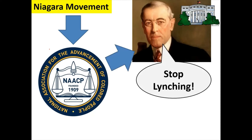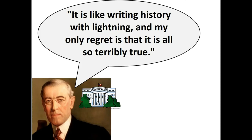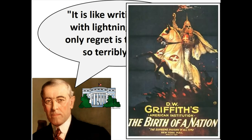An example: this organization lobbied to get the president to stop lynching and make it illegal. And so Woodrow Wilson passed a law that stopped this. But Woodrow Wilson — throw a little shade here — said 'it's like writing history with lightning, and my only regret is that it's all so terribly true.' He says this about a movie that's about the KKK. He was a historian, a university president, a progressive. He also believed in eugenics. And he praises a movie about the KKK.